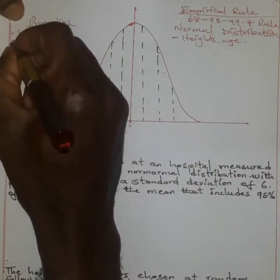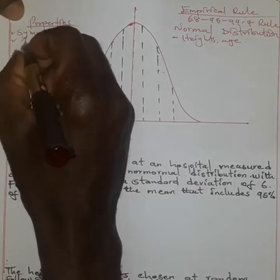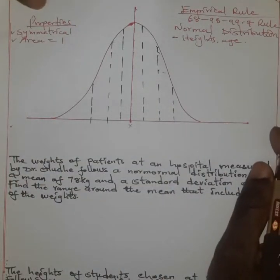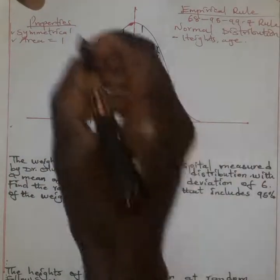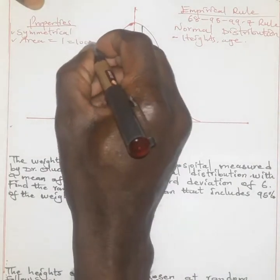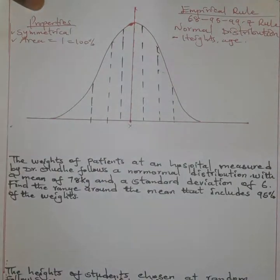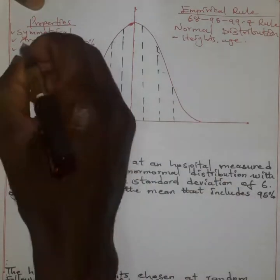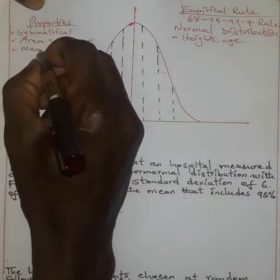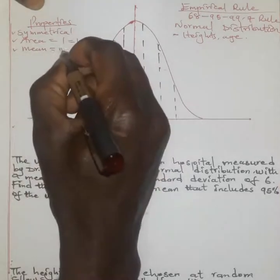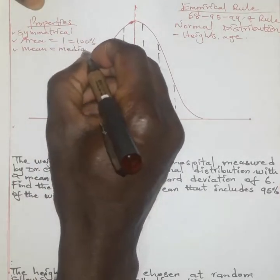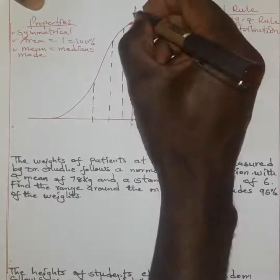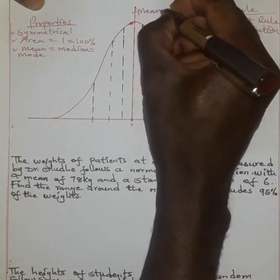Another property is that the area under the curve will normally be equal to one, or if you like, equal to 100 percent. And then the last property, which is very vital, is that the mean will be the same as the median, and also the same as the mode. So we have the mean at the center, which is the average of all the collected data.